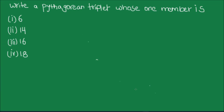Hello students. This video is from the CBSE textbook class 8 math exercise 6.2 question 2. The question says: write a Pythagorean triplet whose one member is given, and we have four parts to the same question.